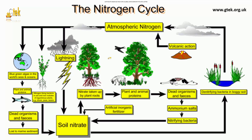Now we are going to see about the nitrogen cycle. Nitrogen is generally in the atmosphere — that is called atmospheric nitrogen. The nitrogen is obtained from three stages. The first one is blue-green algae in the world's seas and oceans.